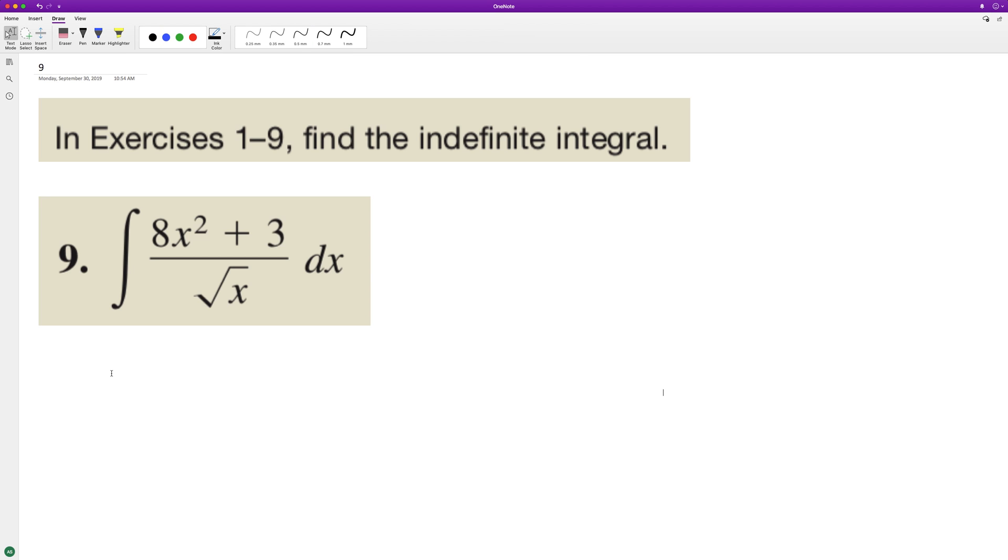Let's find the integral of the following problem. We can rewrite this as integral of 8x raised to the three halves, because when we divide by x raised to the one half we subtract one half, and then plus three x raised to the negative one half.